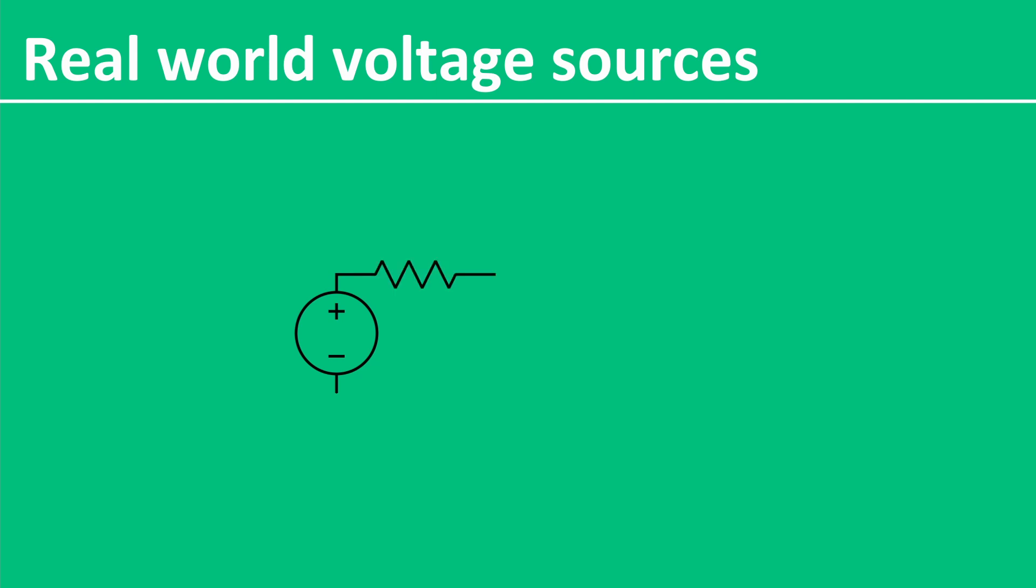This means there is a resistance in any voltage source. It's usually quite low, but can be quite high in some scenarios, like in a guitar pickup. The problem is, when we connect a load in conjunction with the resistor on our voltage source, this acts as a potential divider and changes the voltage.